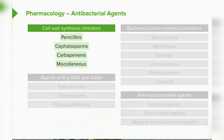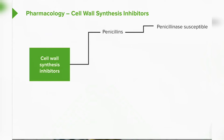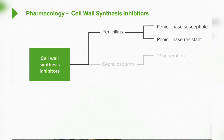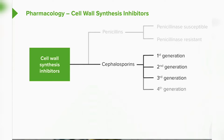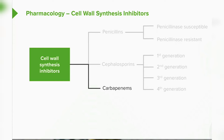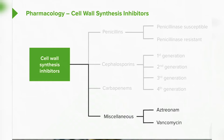Cell wall synthesis inhibitors include the penicillins, the cephalosporins, the carbapenems, and other miscellaneous drugs. There's quite a large variety within each subgroup. With the penicillins, we have penicillinase-susceptible and penicillinase-resistant agents. Within the cephalosporins, we have first, second, third, and fourth generation. Carbapenems are a relatively new group. Miscellaneous drugs can include aztreonam and vancomycin.